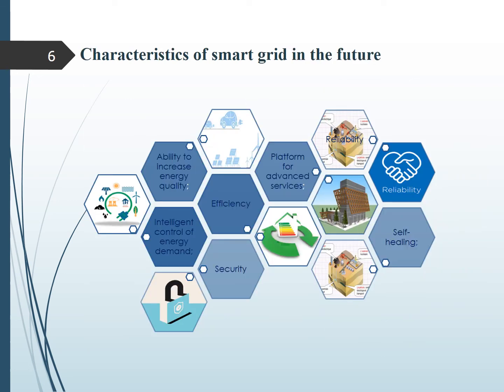The electric system, or smart grid, is able to receive active consumers using renewable energy such as solar, wind, and hydraulic, and dynamic consumers such as electric vehicles. It is characterized by the ability, efficiency, platform for advanced services, ability to increase energy quality, intelligent control of energy demand, and self-healing.